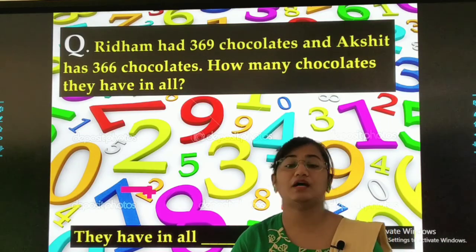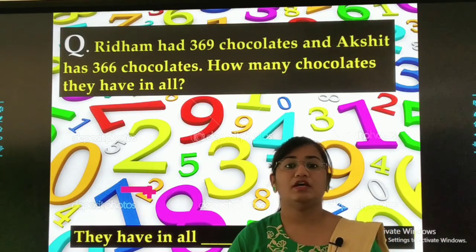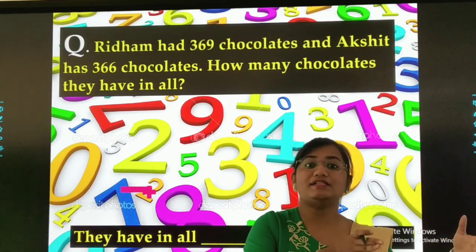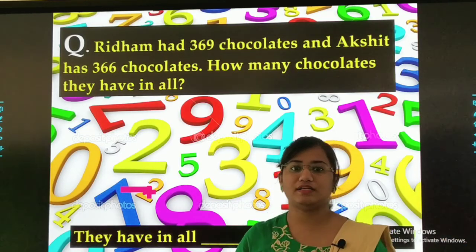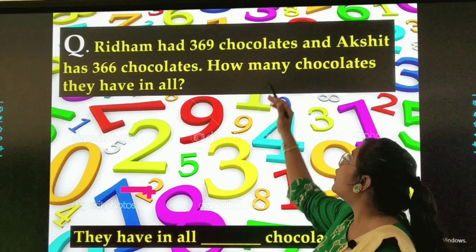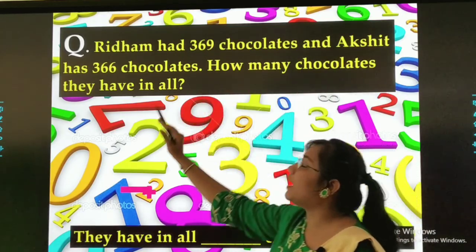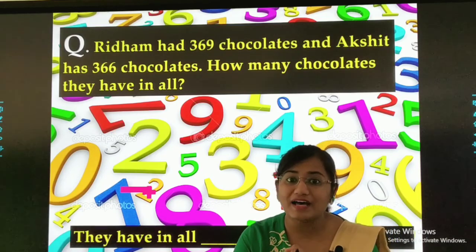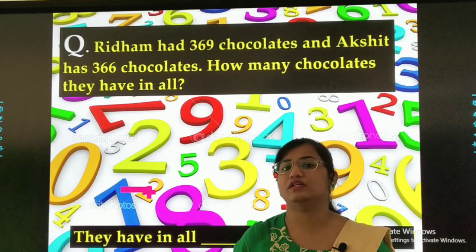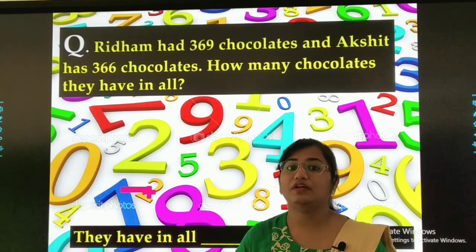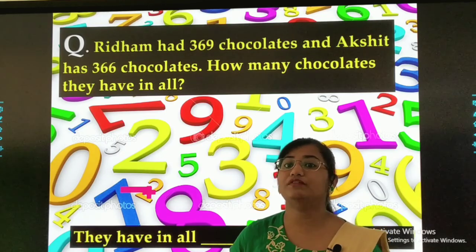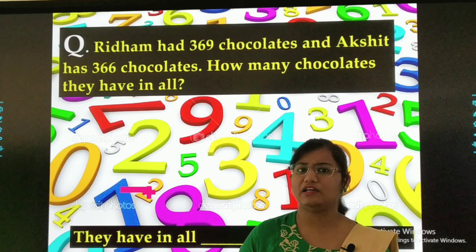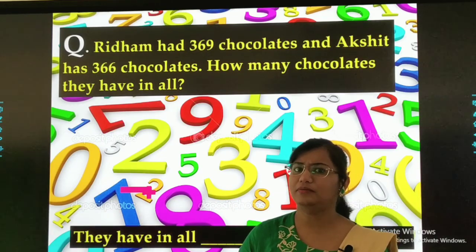Question ka meaning hume samajhna hai. Rhythm ke paas itne chocolates hain, Akshir ke paas itne chocolates hain. Now, how many chocolates do they have in all? In all means? So now we will solve this sum. Hame kya karna hai — addition karna hai ya subtraction karna hai?